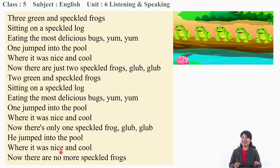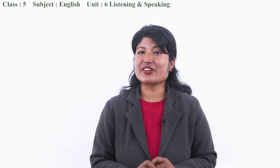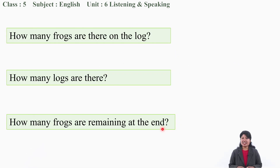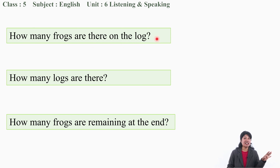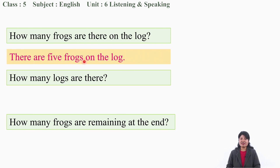We have done with this song - this rhyme, or song, whatever you call it. I have some questions based on this rhyme. Are you ready? There are three questions. How many frogs are there on a log? That means in the beginning, how many frogs are there? One, two, three, four, five. Yes, there are five frogs on the log. Five. How many? Five.